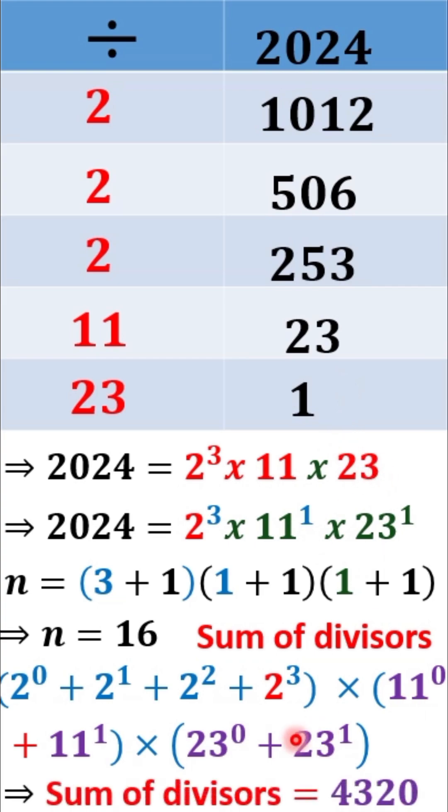and for 23. If we do that and simplify, we have an answer of 4,320.